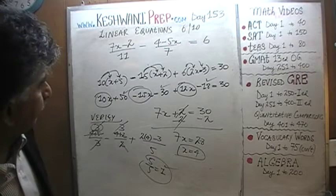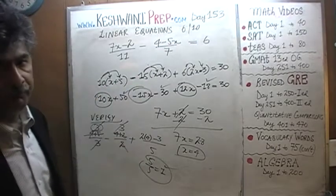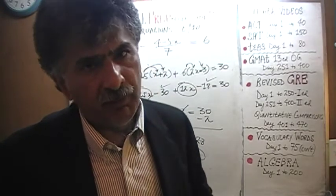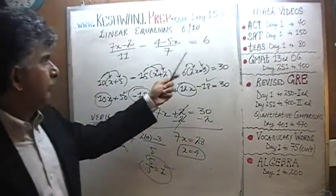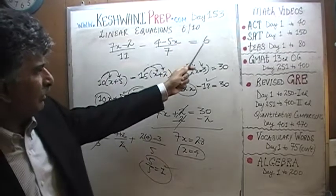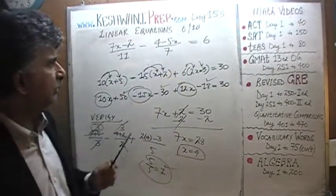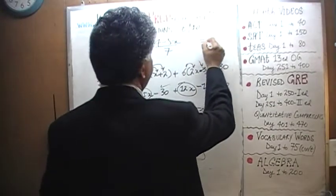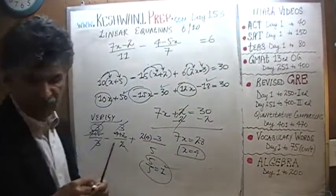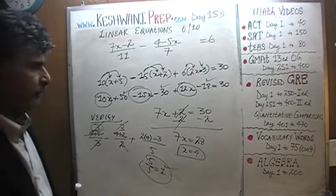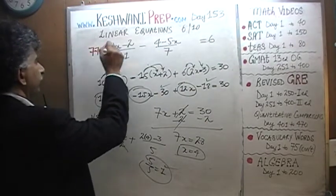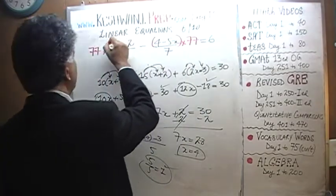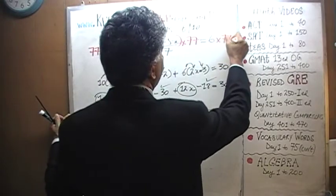We need to get rid of this 11 and 7 from the bottom. The least common multiplier of 11 and 7 is 77. We're going to multiply this entire equation by 77. I'm going to squeeze this out a little bit to the left because I need some room. Equals 6. Now let's multiply this entire equation by 77 — times 77, times 77, with parentheses around each term.